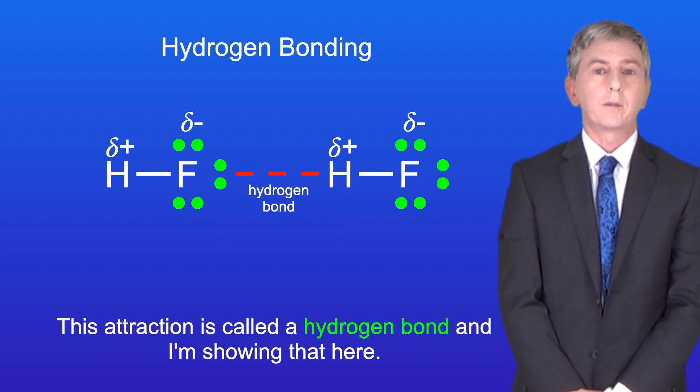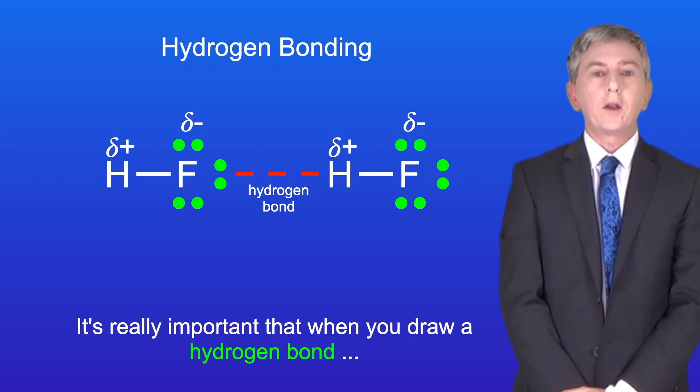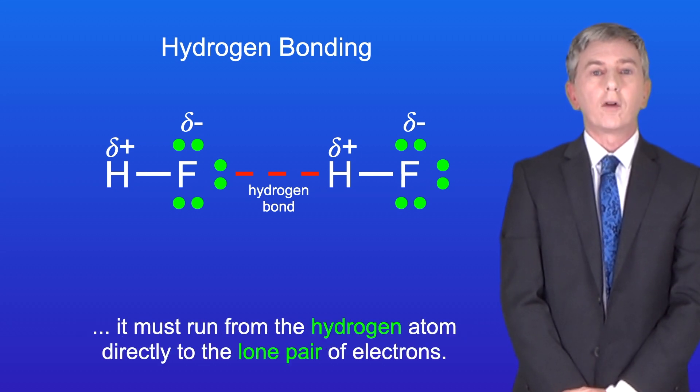This attraction is called a hydrogen bond, and I'm showing that here. Now, it's really important that when you draw a hydrogen bond, it must run from the hydrogen atom directly to the lone pair of electrons.